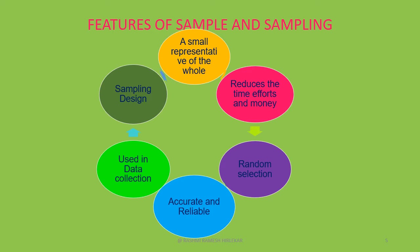The third feature is random selection. Sampling techniques are based on the assumption that random selection of a sample from the universe does possess the same features and characteristics of the universe. The fourth feature is accurate and reliable findings. Findings of a sample survey are accurate and reliable. The larger the sample, the more accurate the results available.